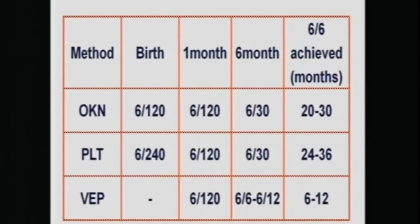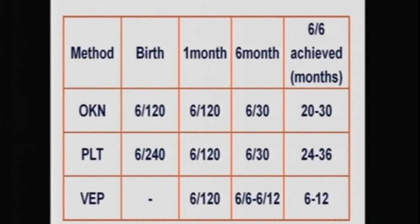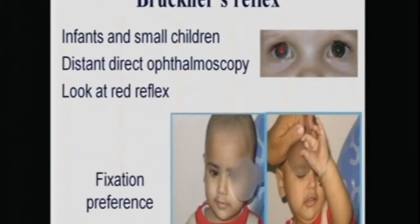The change of visual acuity with age depends upon the method used — OKN, preferential looking, or VEP — and this determines by what age they achieve 6/6 vision or adult visual acuity. The fastest achievement is recorded with VEPs because no responses are required; you are actually testing the anatomical pathway — the child sees the pattern and you get the results — so the earliest achievement of visual acuity is documented on VEP.